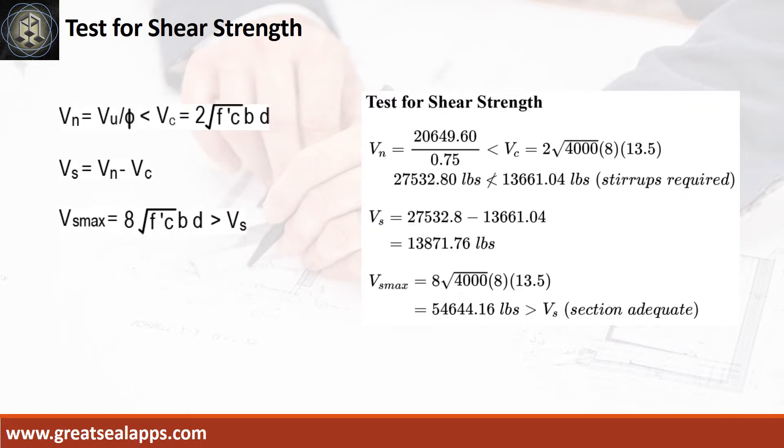The nominal shear force is 27,532.8 pounds, greater than 13,661.04 pounds concrete capacity. The shear force capacity of stirrup is 13,871.76 pounds, less than 54,644.16 pounds maximum stirrup capacity.